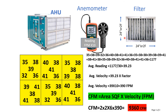So: 2 × 2 × 6 filters, with the average velocity of 390 FPM — the total CFM is 9,360.